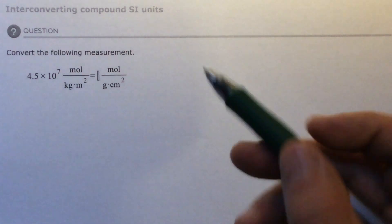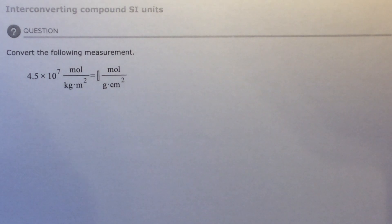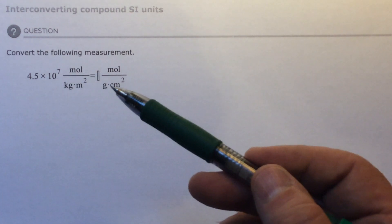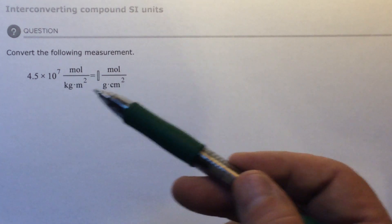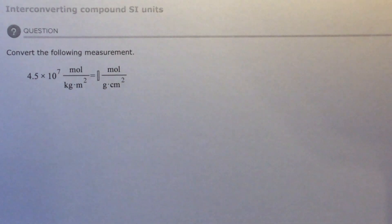And I want to change it to moles over grams times centimeters times centimeters. Now moles are the same, so I don't have to change the top one, but I do have to change kilograms to grams, and I have to change meters to centimeters twice because it's meters times meters going to centimeters times centimeters.